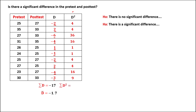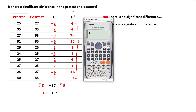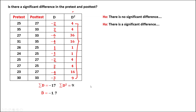Then we need to find the sum of the square of the differences, so again just add all these numbers: 4 plus 4 plus 36 plus 16 plus 1 plus 1, then plus 4, plus 4, plus 16, then plus 9. So the sum of the square of the differences is positive 95.